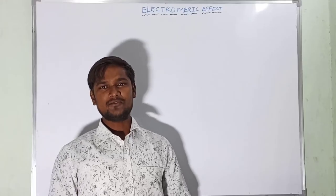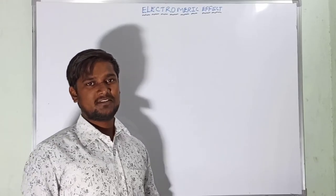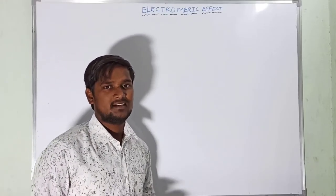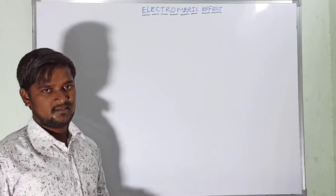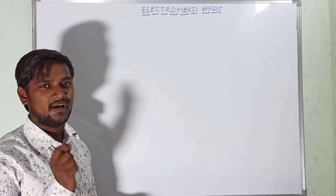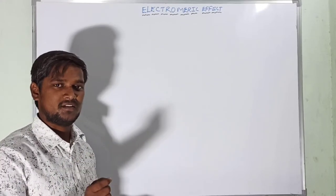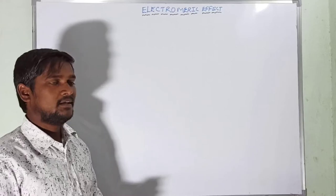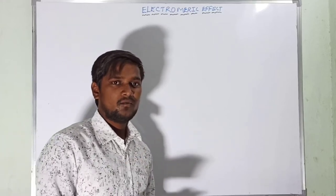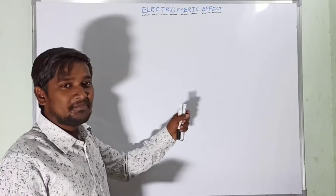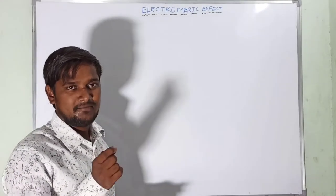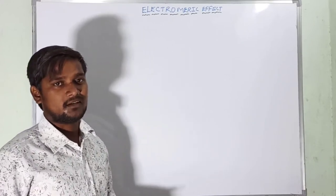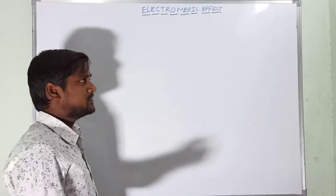Hi everyone, welcome to the RPP Resonance Commission. Let us continue our lectures on GOC's chemistry series, that is general organic chemistry. This is lecture number seven. In this lecture we have discussed temporary effects — the first one is electromeric effect and inductomeric effect.